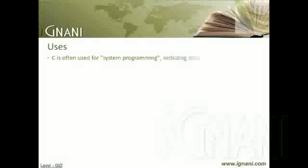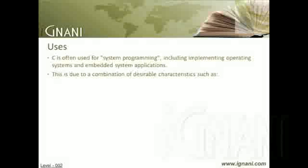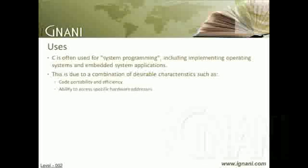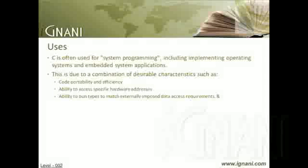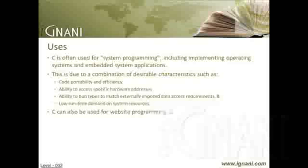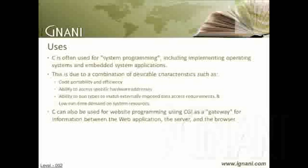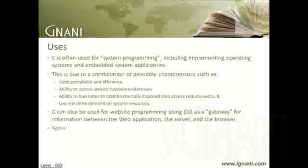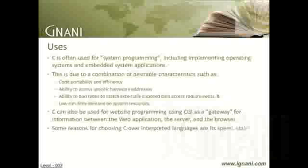C is often used for system programming, including implementing operating systems and embedded system applications, due to a combination of desirable characteristics such as code portability and efficiency, ability to access specific hardware addresses, ability to match externally imposed data access requirements, and low runtime demand on system resources. C can also be used for website programming using CGI as a gateway for information between the web application, the server, and the browser. Some of the reasons for choosing C over interpreted languages are its speed, stability, and near universal availability.